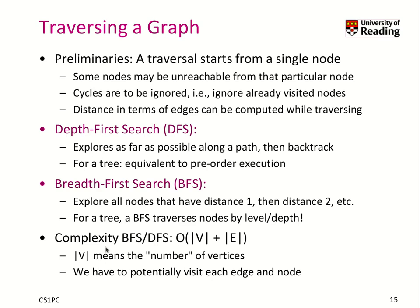We have a runtime complexity of O(V + E), where V is the number of vertices and E is the number of edges. If it's a fully connected graph, the number of edges will be V squared, so the complexity will be O(V²). We have to potentially visit each edge and node during the traversal.